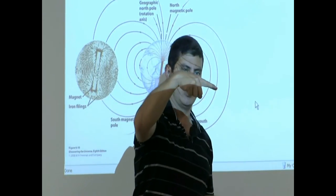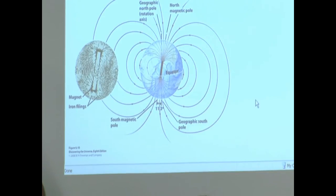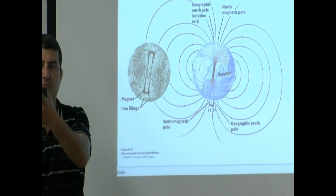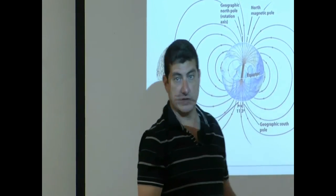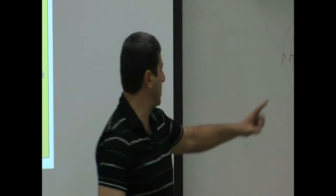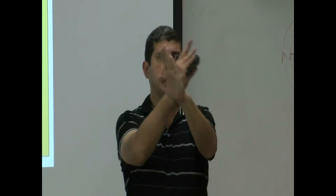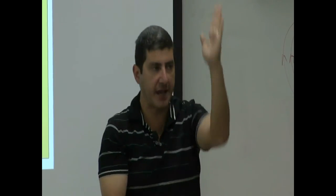If you go above the equator, compasses point into the ground. At the equator, they're roughly horizontal. In the Southern Hemisphere, the compass points up from the ground, so the dipping angle is positive. That's one way to know what your latitude on the Earth is. The magnetic axis is offset 11 degrees from the geometric axis. For some other planets, particularly Neptune and Uranus, the angle between the magnetic axis and the geometric axis is way bigger — about 40 to 50 degrees. For the Earth, they're very close, only 11 degrees.